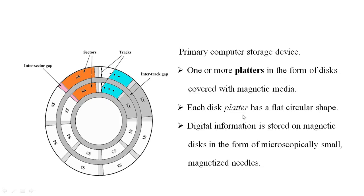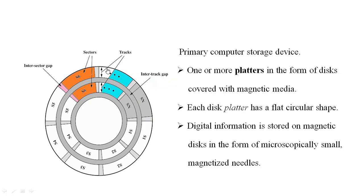One or more platters in the form of a disk — this is called the magnetic medium. Each disk platter has a flat circular shape. Digital information is stored in the form of microscopically small magnetized needles. This is called the inner track gap, and this is called the tracks. These are called the sectors, and this is called the inter-sector gap in between these two.